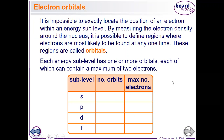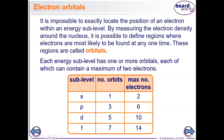Each sub-energy level has one orbital or more. This table shows the number of orbitals in each sub-energy level: s contains one orbital, p contains three, d contains five, and f contains seven. Each orbital can carry only two electrons. That's why sub-energy level s is filled by 2 electrons, p by 6, d by 10, and f by 14. For example, p has three orbitals and each holds two electrons, so 2 × 3 = 6.